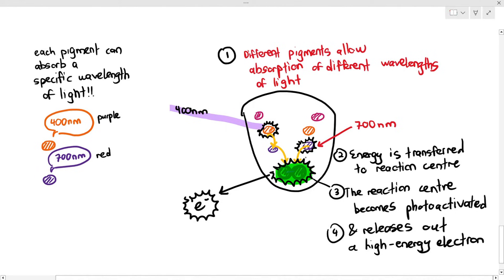You might be thinking, why does it have to release out an electron? Again, we will talk about that. As we go along, we are going to explain this bit by bit. I just need you to understand what the photosystem is supposed to do.